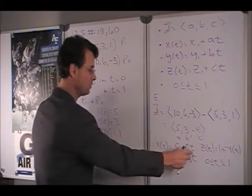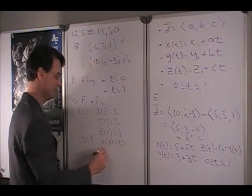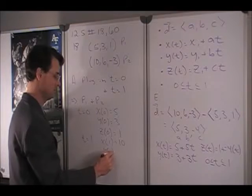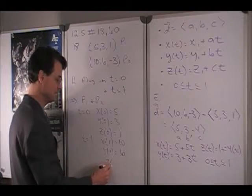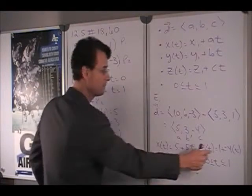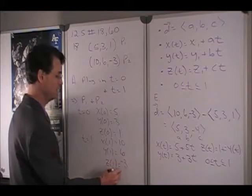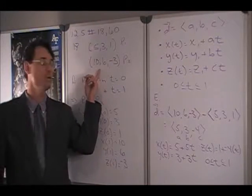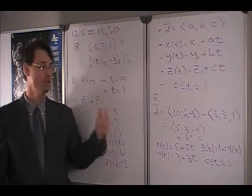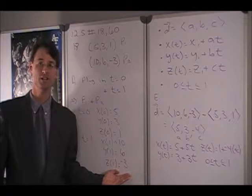Now we can double check at T equals 1. At T equals 1, x equals 5 plus 5, or 10. y is 3 plus 3, or 6. And z is 1 minus 4, or negative 3. And indeed, we do get our second point back: (10, 6, -3). So our assessment shows that our solution is correct.